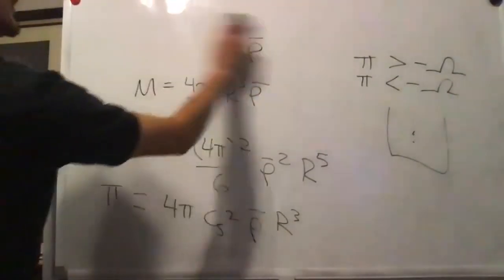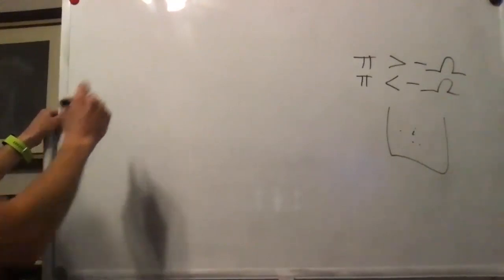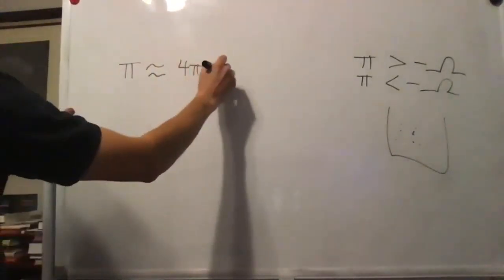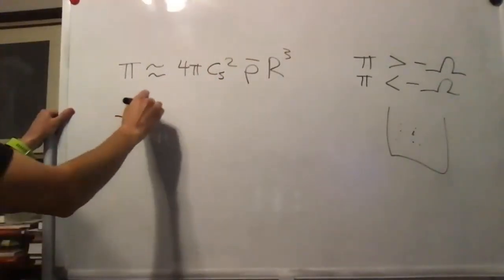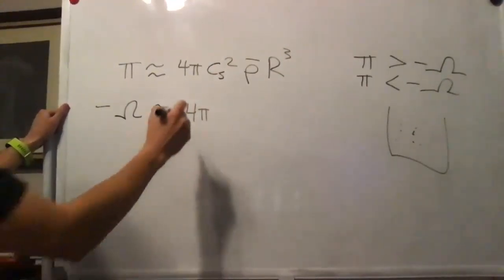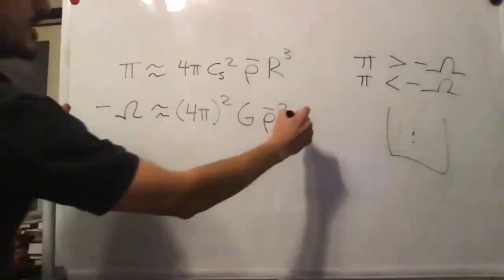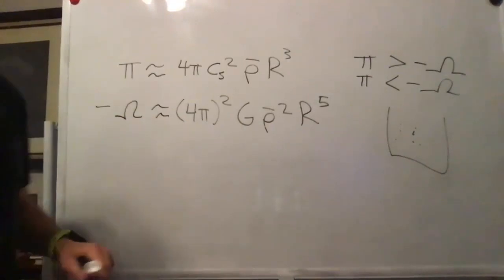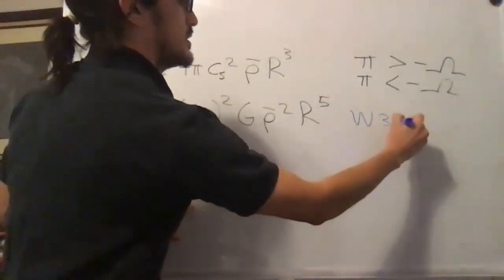We use: capital pi approximately equal to 4π cs² rho R³, and negative omega approximately equal to 4π² G rho² R⁵. This is from Weinberg, metric 3.4.5.